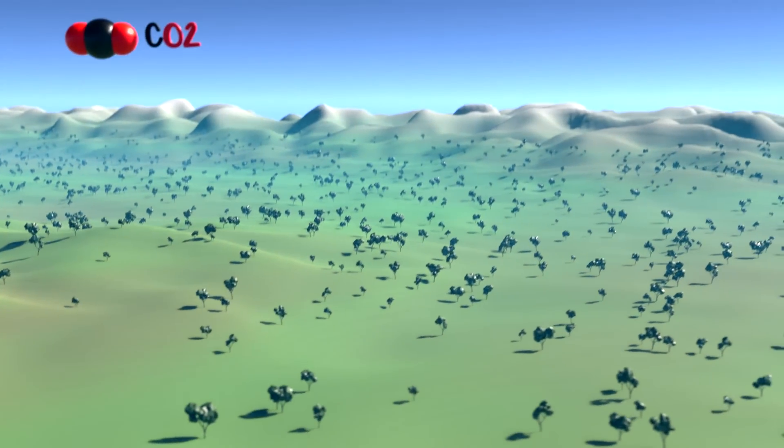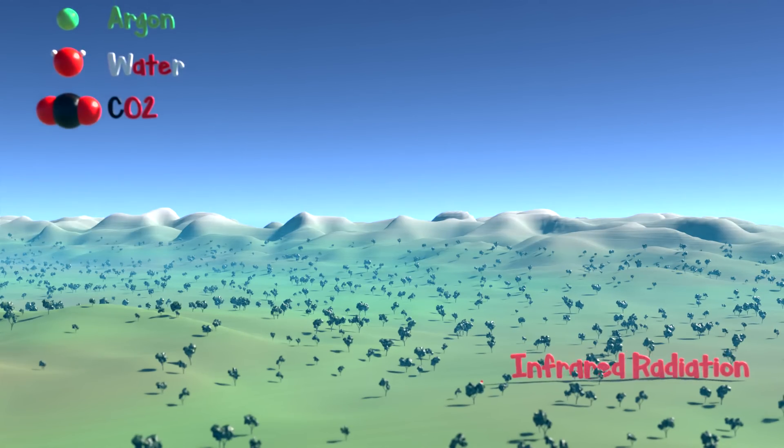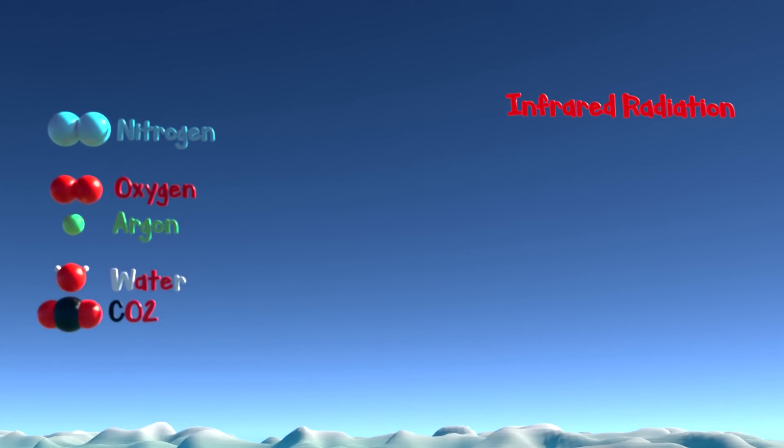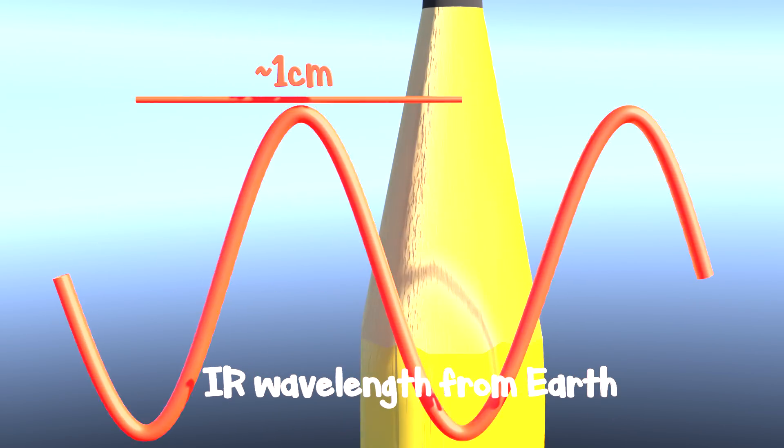Since all molecules, atoms, and particles are always dancing, the Earth itself is releasing light, but much weaker in the form of longwave or infrared radiation. These wavelengths are now too low a frequency to oscillate the electron clouds. However, they can oscillate entire molecules or ions.